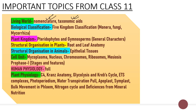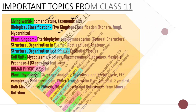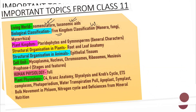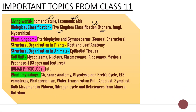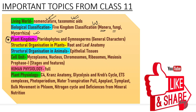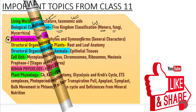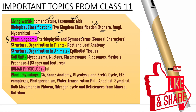In Biological Classification, do read the five kingdom classification or the Whittaker's classification. Don't leave the general characteristics of Monera, Fungi, and Mycorrhiza. In Plant Kingdom, do remember to read the Pteridophyte and the Gymnosperm's general characters.